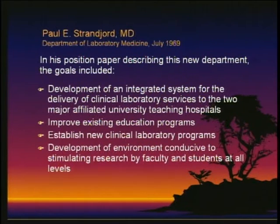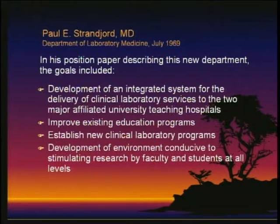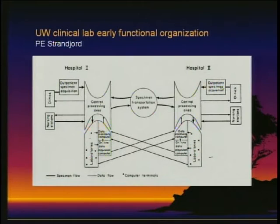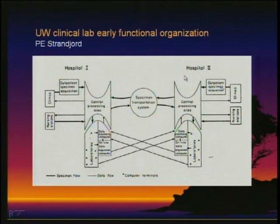Paul Strangert was selected as the first chairman of the department, brought in to link all these labs together. His goals were: first, to build the clinical service; second, to fix the teaching programs; and third, to build a research base. He wanted to develop an integrated system with the delivery of the clinical labs across two hospitals — specializing labs at each site to avoid duplication, with common labs at both, linked together by computers, and a central processing area at each hospital to manage specimens.